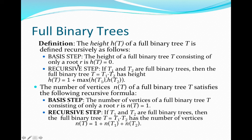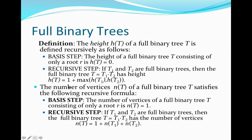To define subsequent trees, we apply the recursive step. Trees defined at the recursive step take two previously defined full binary trees, T1 and T2, and attach a new root connecting to the root of T1 and the root of T2. We define the height of a tree formed in this way by taking 1, to account for the new root being added, plus the maximum height of the two existing trees. So the height equals max(h(T1), h(T2)) + 1.